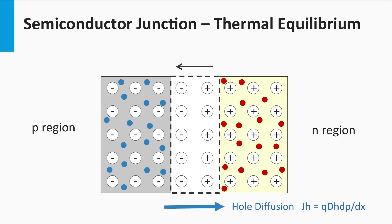The same is true for holes: the diffusion current density for holes is ruled by the density gradient, which is the hole density in the p-region minus the hole density in the n-region. Since holes are the minority charge carriers in the n-region, the gradient is determined by the majority hole density in the p-region. In other words, diffusion is controlled by the majority charge carriers. You can vary diffusion current density by either increasing the majority carrier density or changing the width of the depletion zone, dx. Applying a voltage bias over the solar cell can manipulate this width.